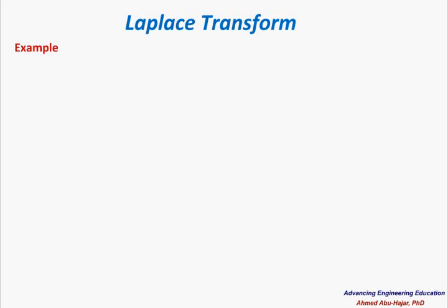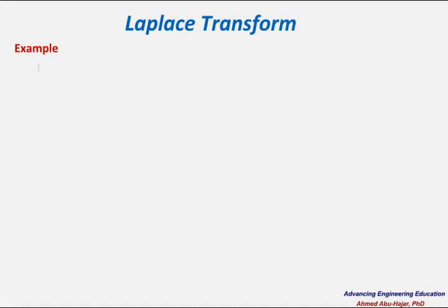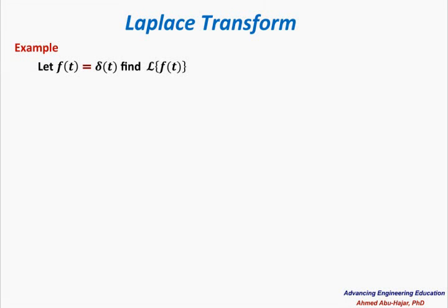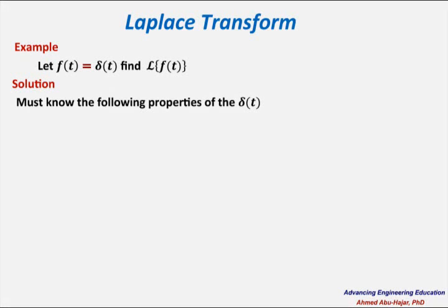Now we would like to do a numerical example to find the Laplace transform of a function using the definition. Let f of t equal delta of t — find its Laplace transform F of s. To evaluate this, we need to know three important properties. The first is: if we multiply delta of t by a function g of t, the result equals delta of t times g evaluated at zero.